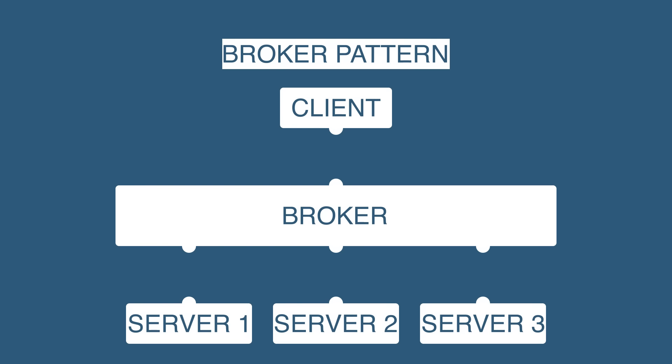Pattern 7: Broker Pattern. This pattern is used to structure distributed systems with decoupled components. These components can interact with each other by remote service invocations. A broker component is responsible for the coordination of communication among components. Servers publish their capabilities to a broker. Clients request a service from the broker, and the broker then redirects the client to a suitable service from its registry. The broker pattern allows for dynamic change, addition, deletion, and relocation of objects, and it makes distribution transparent to the developer. However, a disadvantage is that it requires standardization of service descriptions. This pattern is often used in message broker software such as Apache ActiveMQ, Apache Kafka, RabbitMQ, and JBoss Messaging.